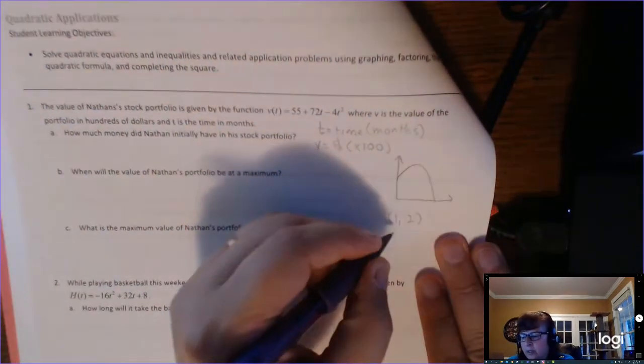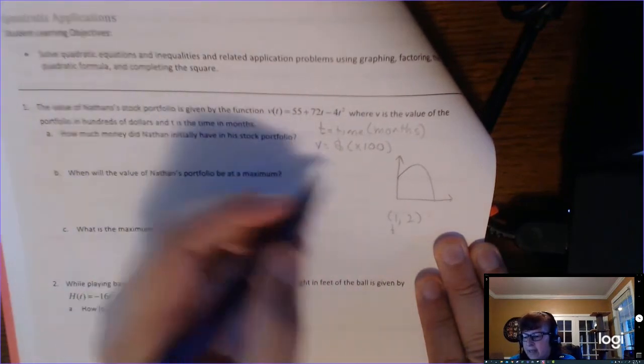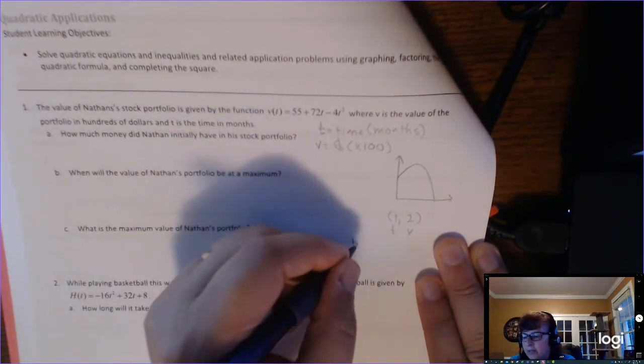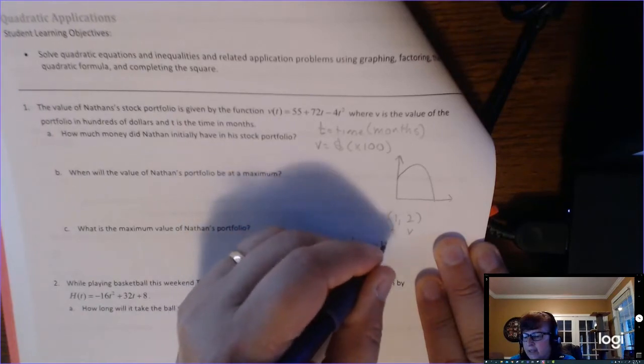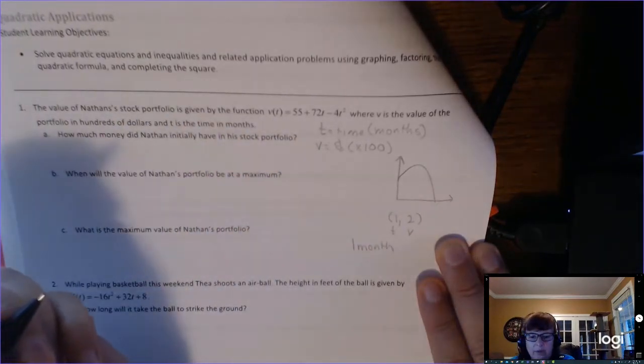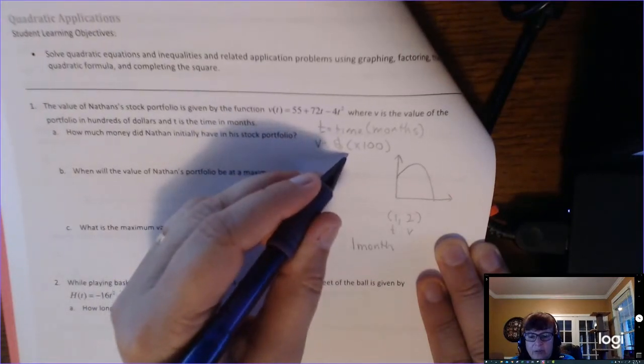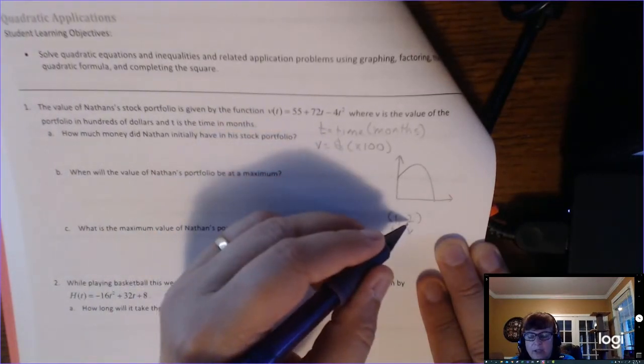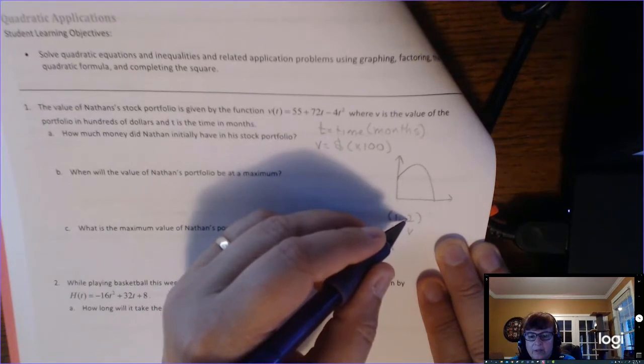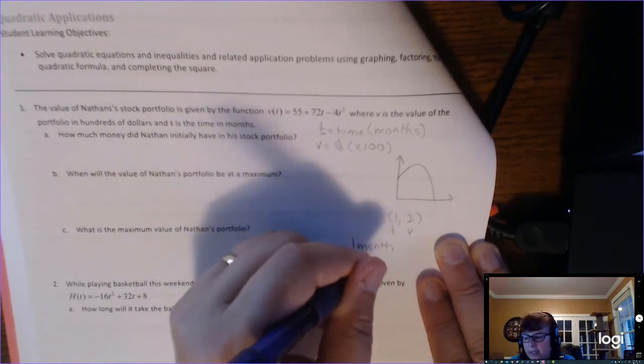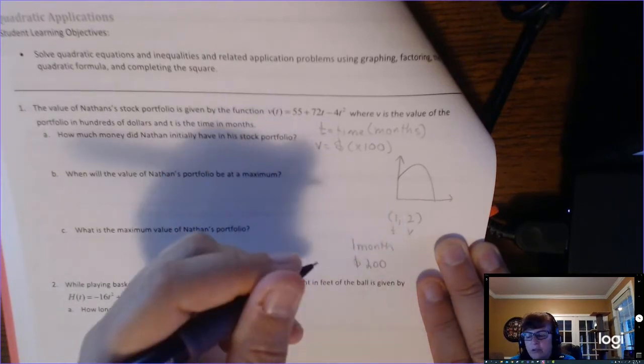Well, t is one, and v is two, but t is time in months, so that would stand for one month. What would that two stand for? v is money times a hundred, so when you're interpreting, and you're pulling the number outside of the math, you have to multiply by a hundred, so that would be after one month, there's two hundred dollars.